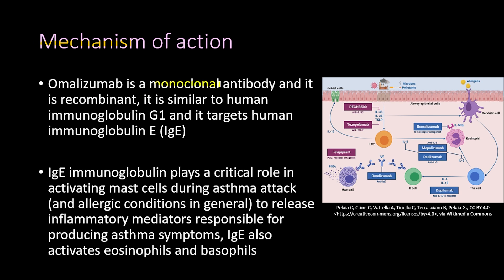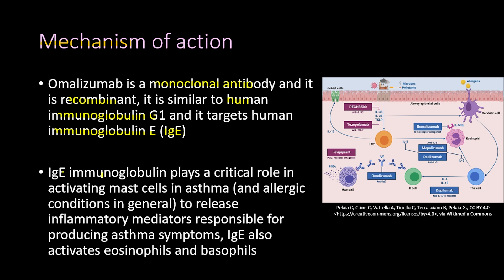Omalizumab is a monoclonal antibody — an antibody produced by cloning a unique white blood cell. It is recombinant, meaning it is produced by a DNA recombination method, and it is similar to the human immunoglobulin G1 (IgG1).